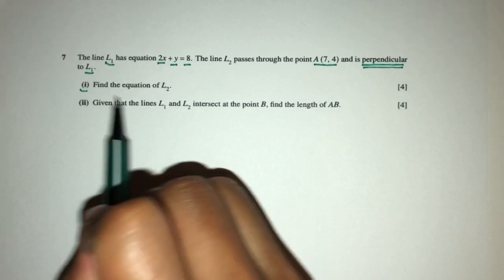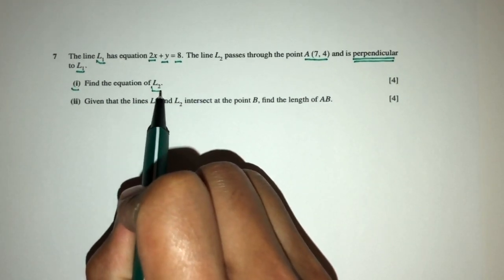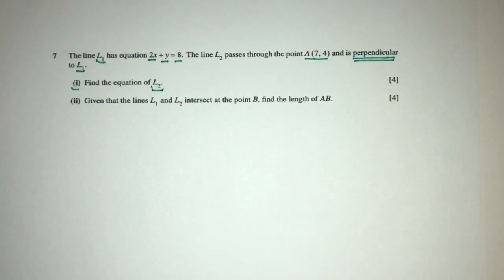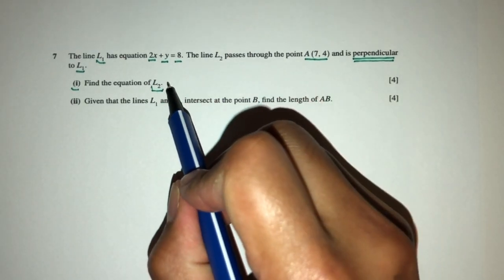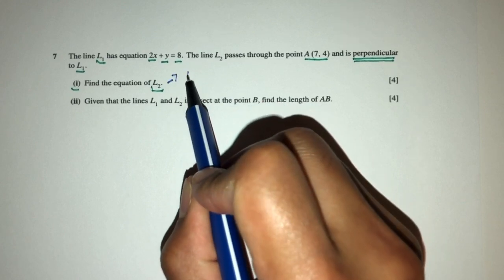So part one, we have to find the equation of line L2. Again, we have to find the equation of a straight line. Now to find the equation of a straight line, we must first find its gradient.